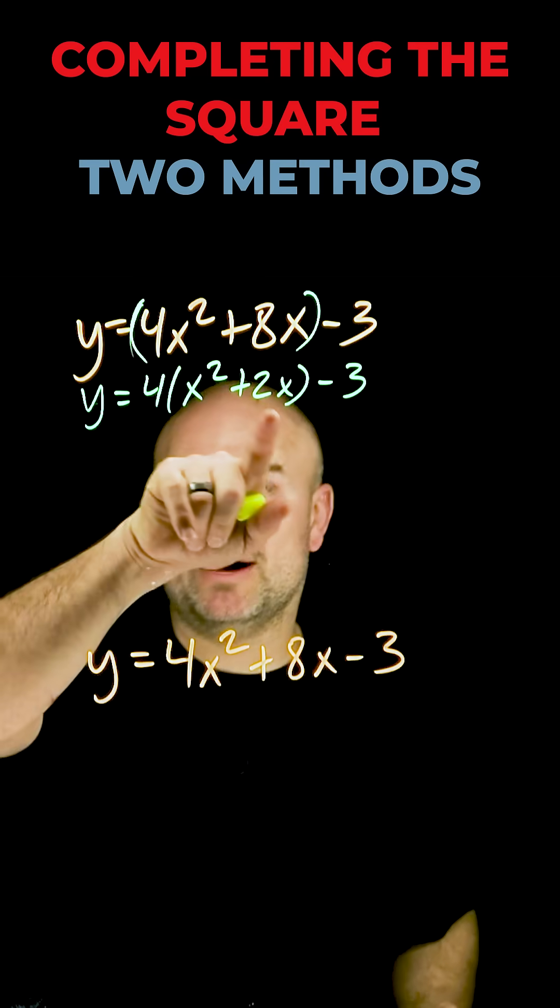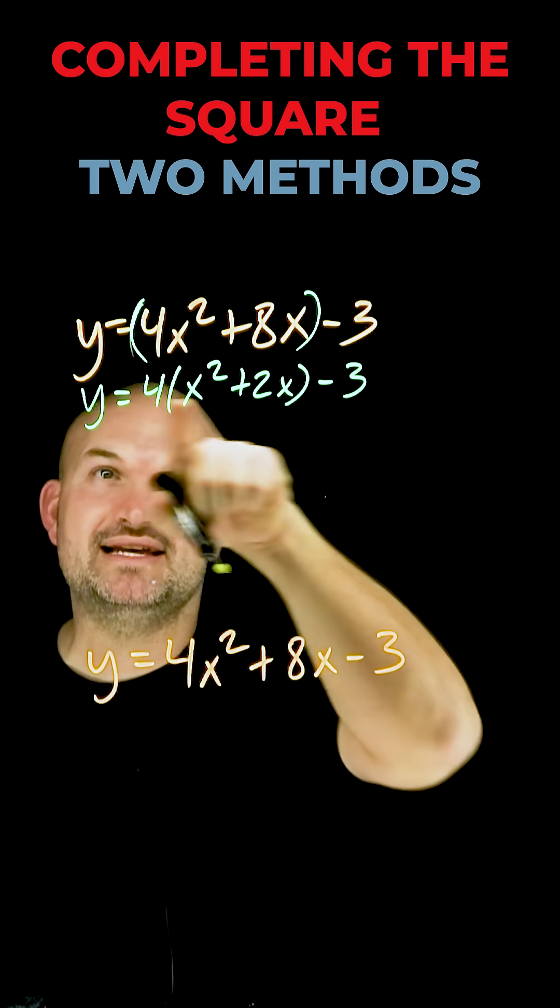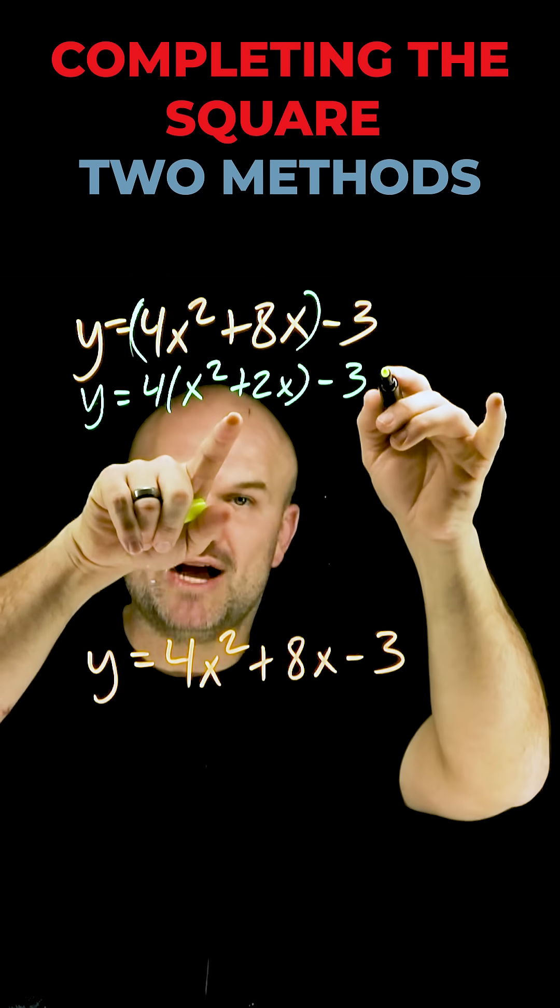Now what you can do is go ahead and complete the square, and just remember though, whatever you add inside this parentheses is being multiplied by 4. Also, whatever you add inside this parentheses you have to subtract on the same side.